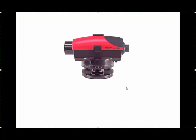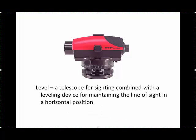We do a lot of our leveling work with optical instruments such as is shown in this picture. This type of level, often called an optical level or automatic level, has a telescope for sighting which is combined with a leveling device for maintaining that line of sight in a horizontal position.